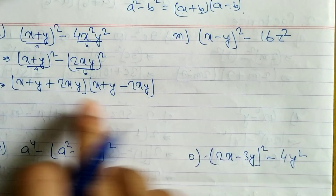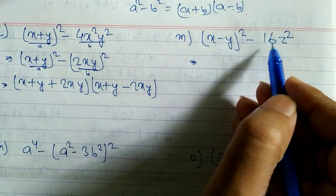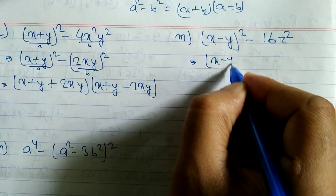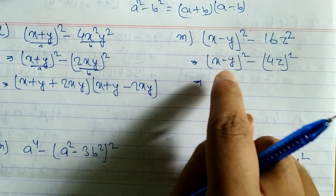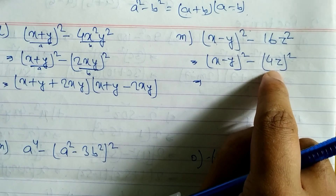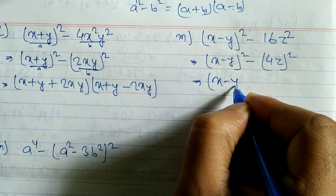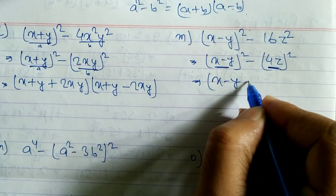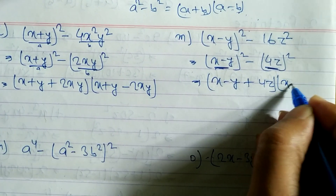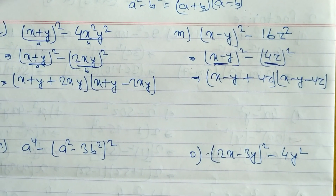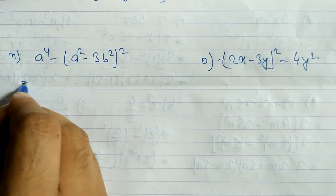For problem m: (x - y)² - 16z². The first term is already a perfect square. We convert 16z² = (4z)². With a = (x - y) and b = 4z, the formula gives [(x - y) + 4z][(x - y) - 4z], which is (x - y + 4z)(x - y - 4z).